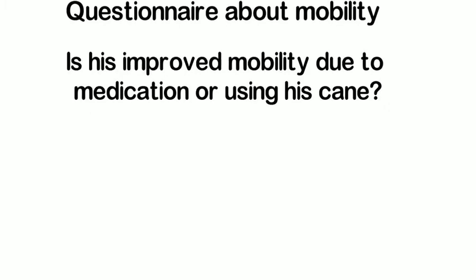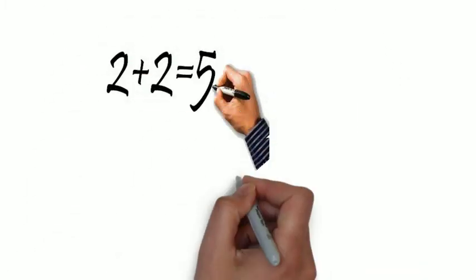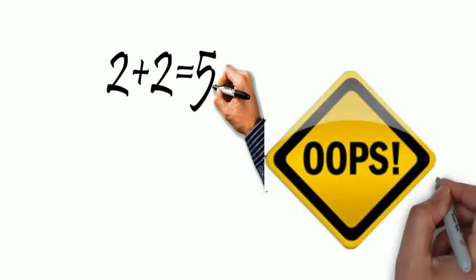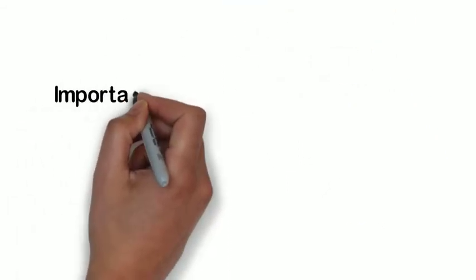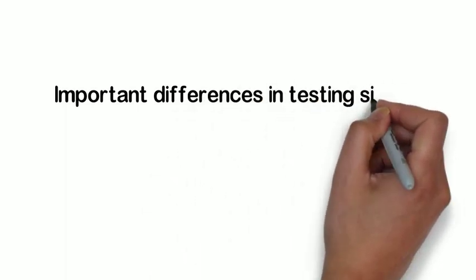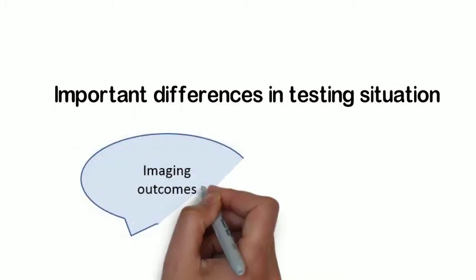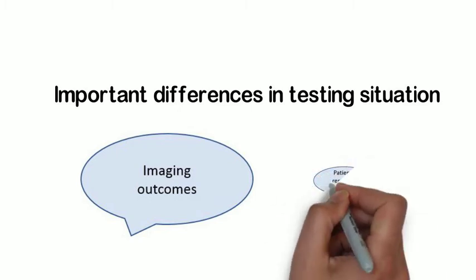So Indira and John are showing us about things in an outcome testing situation that can make real differences in the score that we get from a questionnaire or from a machine. Over the past two years, when we were looking carefully at imaging outcomes and how we gather evidence about their measurement performance, we found that these important differences in the way tests are set up and done are talked about a lot more in the imaging field than they are in other types of patient outcomes.